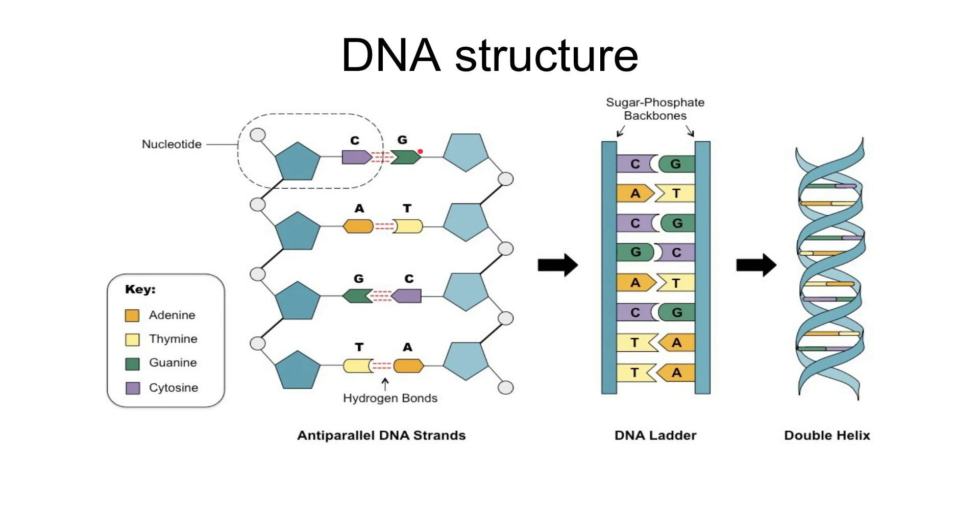When we have these complementary bases near each other, we have complementary base pairing and hydrogen bonds forming between them. Between a C and a G we have three hydrogen bonds, and between an A and a T we have two hydrogen bonds. This will occur all the way along a DNA strand. DNA strands can be millions and millions of nucleotides in length, so we have millions and millions of hydrogen bonds attaching them together. That makes a DNA molecule relatively stable.